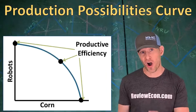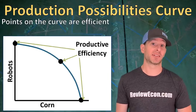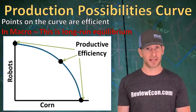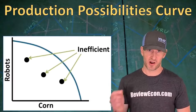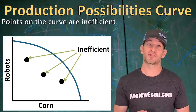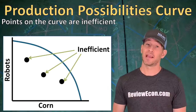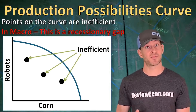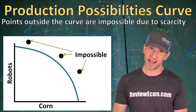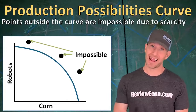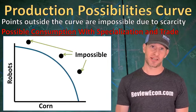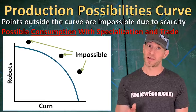When you see a level of production that is on the production possibilities curve, that is an efficient level of production — in macroeconomics we call that long-run equilibrium, meaning all resources are used to their maximum potential. Points within the curve indicate inefficient use of resources, which in macroeconomics represents a recessionary gap with unemployment. Points outside the curve are impossible because of scarcity. With comparative advantage, specialization, and trade, economies can consume outside the curve but not produce.